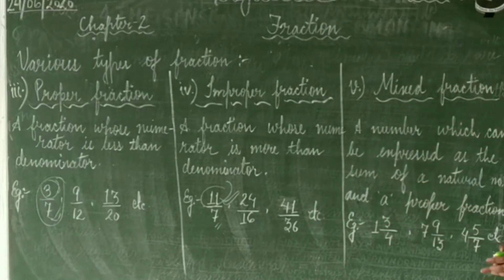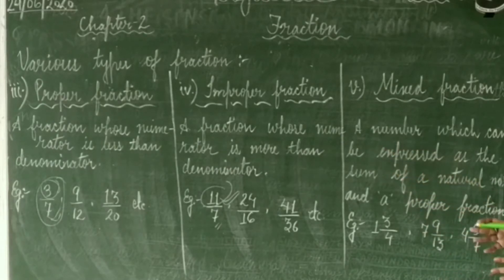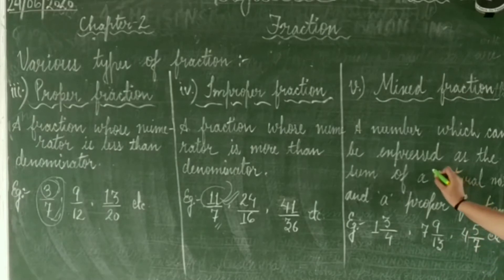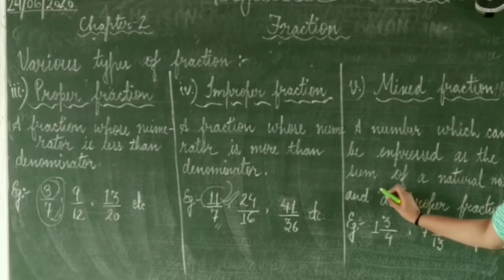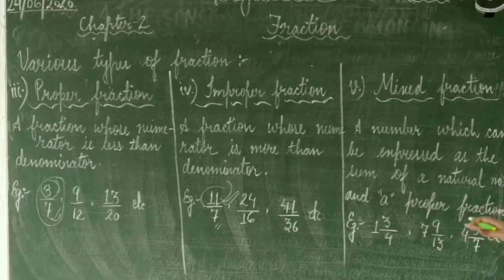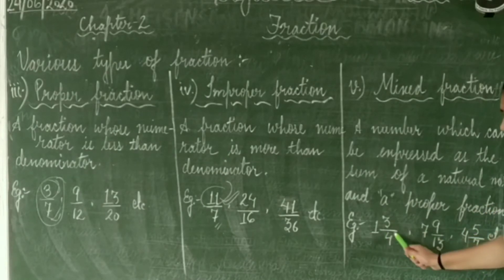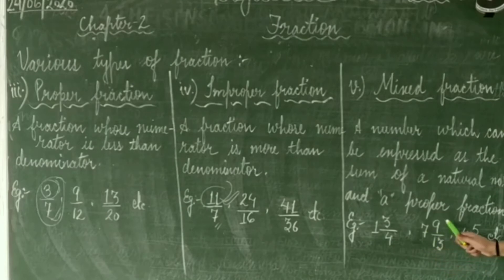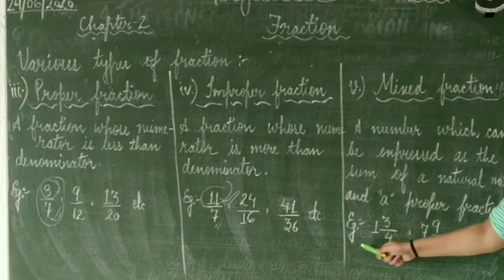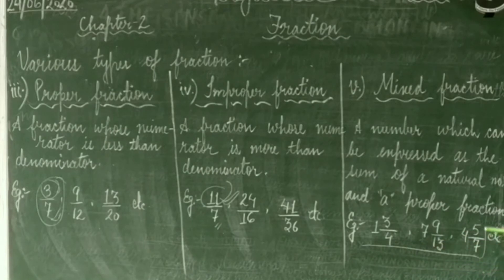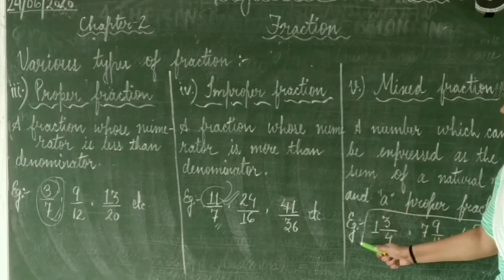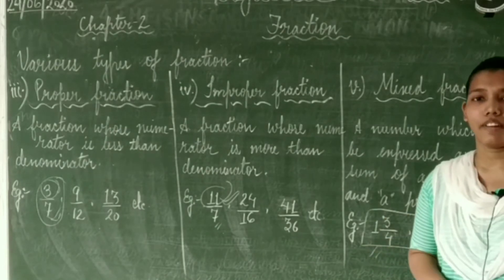Now let us study what is a mixed fraction. In a mixed fraction, a number which can be expressed as the sum of a natural number and a proper fraction is known as a mixed fraction. For example, 1 whole 3 upon 4, 7 whole 9 upon 13, and 4 whole 5 upon 7 — these represent mixed fractions.